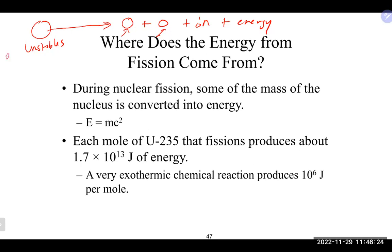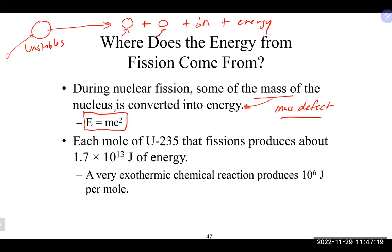This can happen spontaneously or be initiated — sometimes called transmutation — where you shoot a particle at a nucleus, it becomes unstable and kicks off a fission reaction. There is a difference between the actual atomic mass of an isotope and the mass of the particles that make up the nucleus. During fission, some of that mass is converted into energy, calculated using Einstein's equation: E = mc², where m is the mass defect and c is the speed of light, 3×10⁸ m/s.